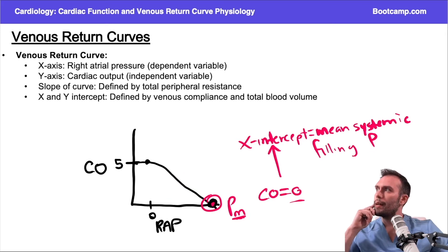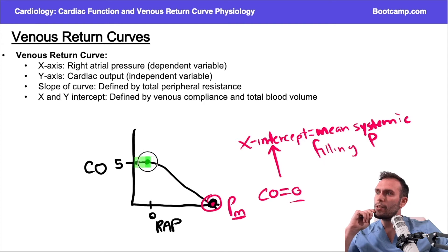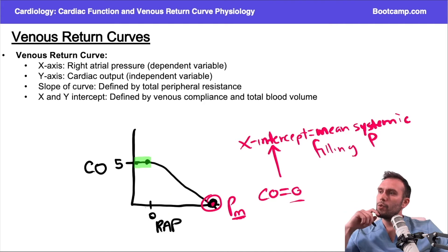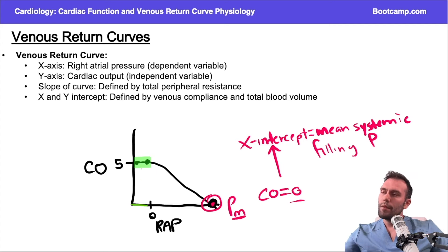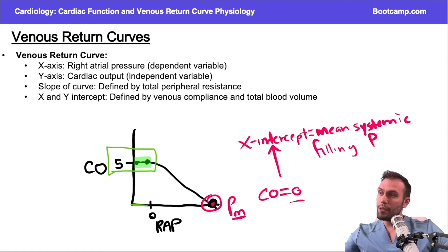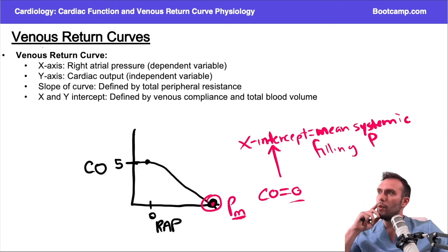You might wonder: why does cardiac output plateau at about five once we reach zero right atrial pressure — why doesn't it keep going up? The reason it plateaus is that once you get to these negative pressures, the vena cava starts to collapse and isn't bringing more blood forward. As it collapses, no blood gets through back into the heart. So cardiac output cannot exceed a certain number — in this patient on this venous return curve, that number is about five.